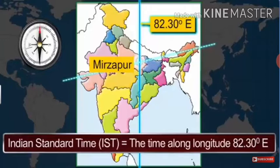In India, the longitude of 82.5 degrees east is treated as the standard meridian. The local time at this meridian is taken as the standard time for the whole country and it is known as the Indian Standard Time. It passes through Mirzapur, which is in Uttar Pradesh.